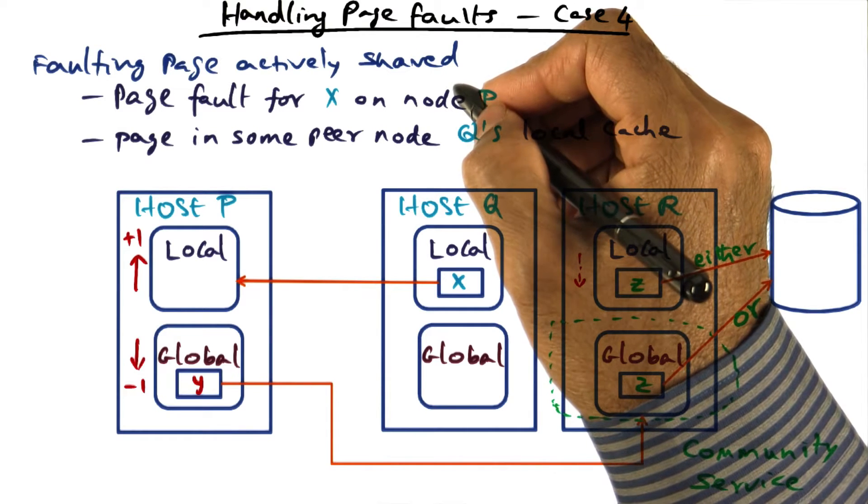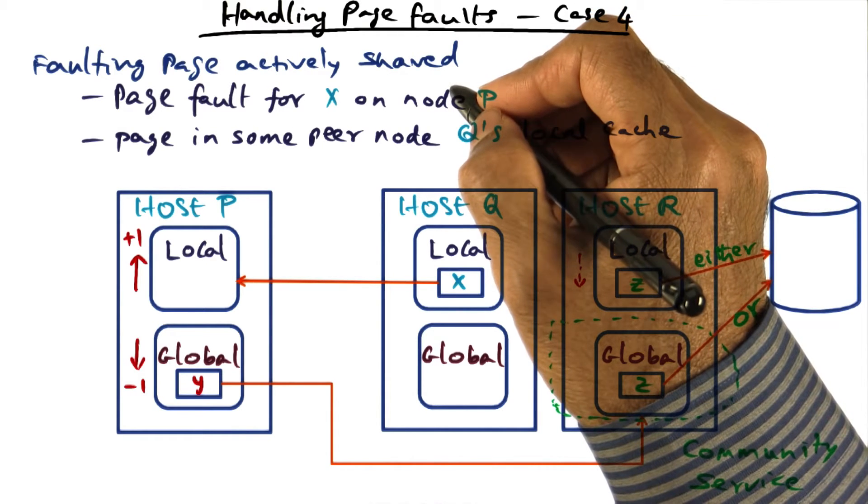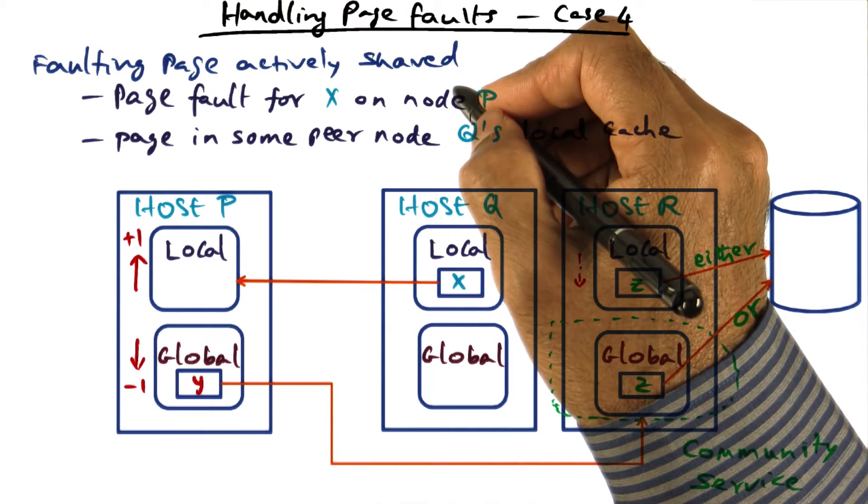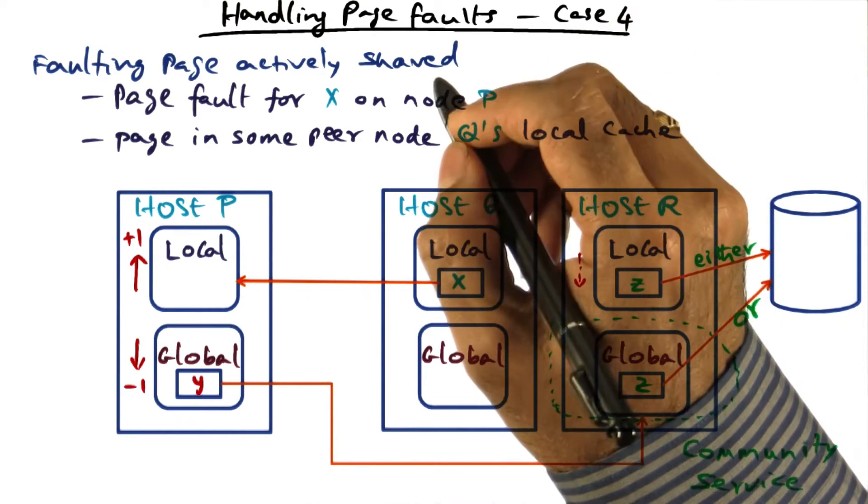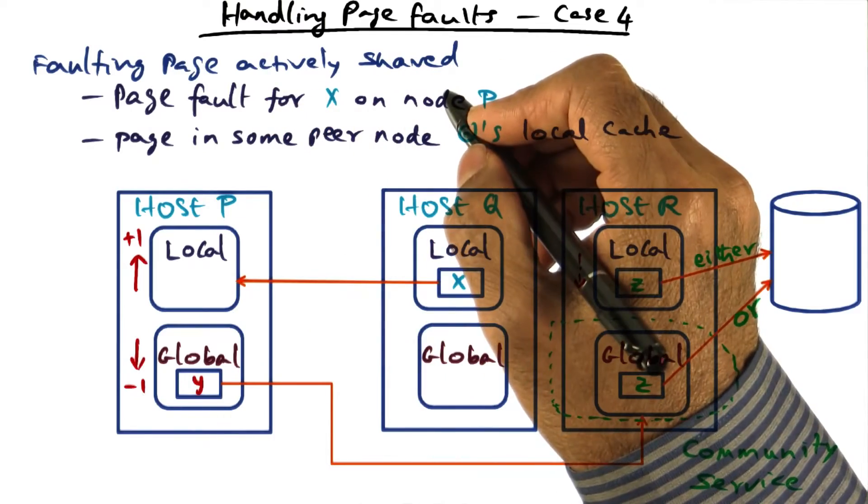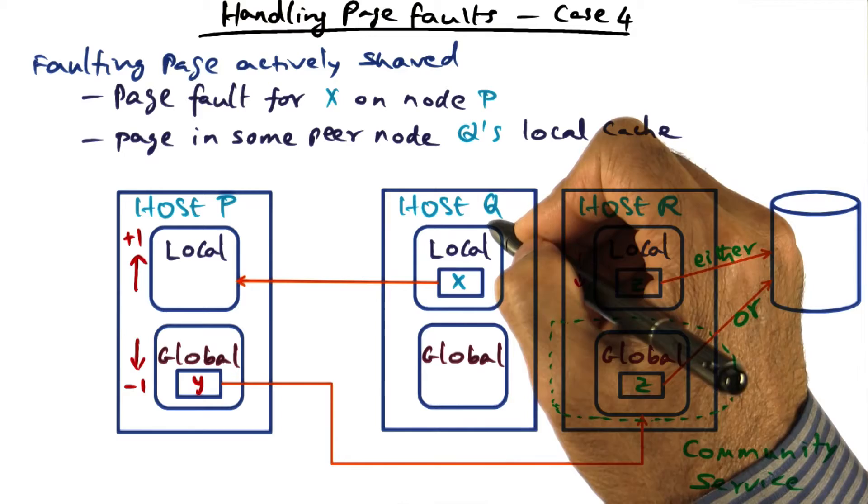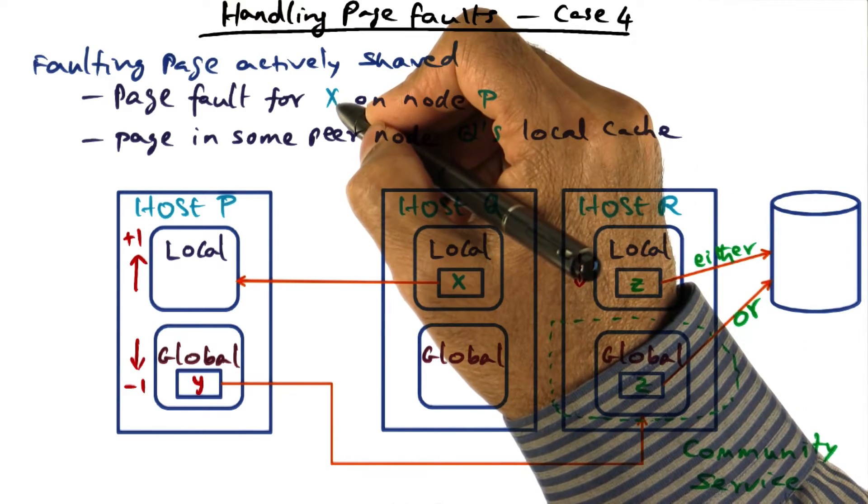So far, the cases that we've considered are cases in which a page that we are faulting on is private to a process. So let's consider the case where a page is actively shared. That means there are two hosts, P and Q, and both of them are actively sharing a page X.